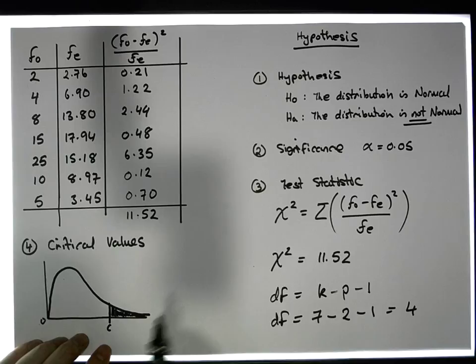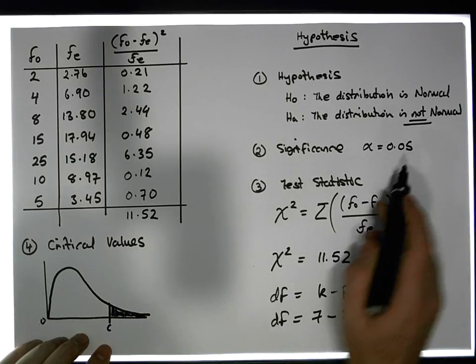Now the area in the tail is based off our significance. In this case, alpha equals 0.05.